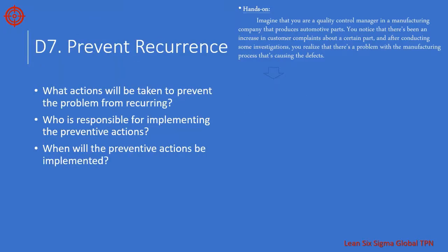The seventh step is to prevent recurrence. This involves taking measures to ensure that the problem does not happen again in the future. This could involve implementing new procedures, training employees, or other necessary measures. In our example, the team decides to implement a new quality control process that will catch any defects before the parts are shipped to customers. They also train employees on the new process and ensure that it's being followed correctly.